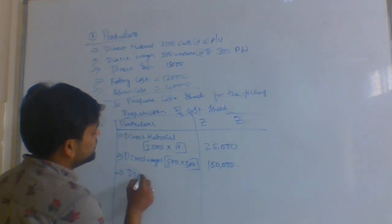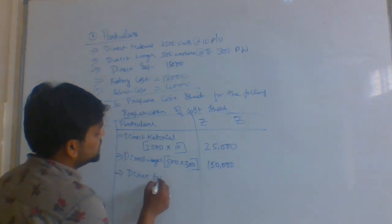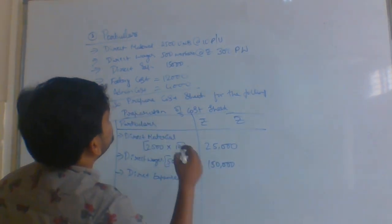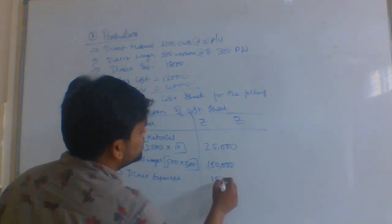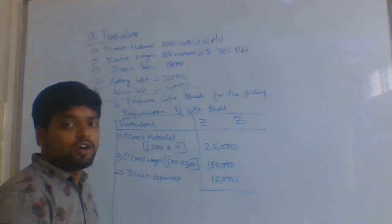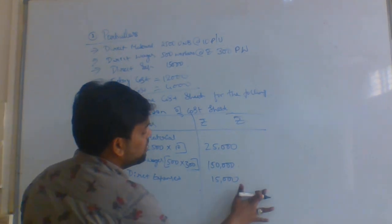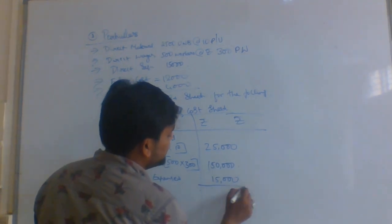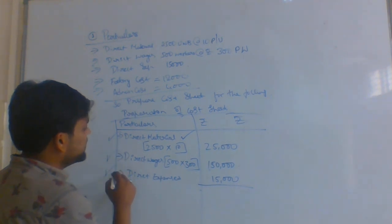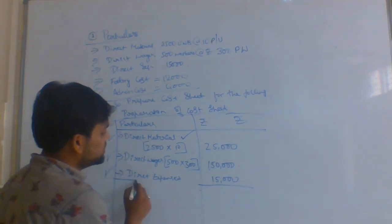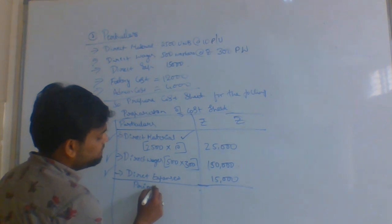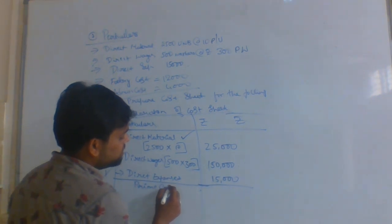Direct expenses — direct expenses is 15,000, directly given. Once you get all these three items — direct material, wages, and direct expenses — you can add them. If you add all these, you will get prime cost.